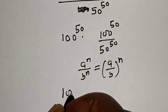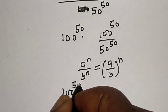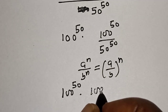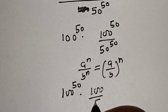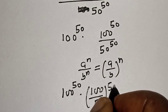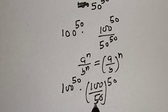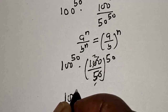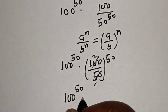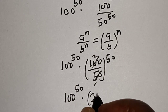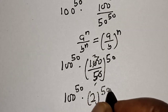Then, we have 100 to the power of 50 divided by 100 to the power of 50. Now, 50 here 1, 50 here 2, and this gives us 100 to the power of 50 multiplied by 2 to the power of 50.